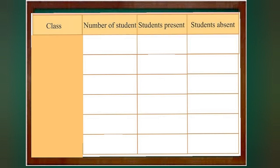When creating the table, we will first write class, then total number of students, then number of students present, and then the number of students absent. Below the class, we will write class 1st. The total number of students is 20, the number of students present is 17, and the number of absent students is 3.